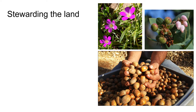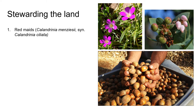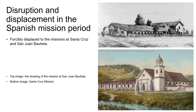Historically, managing natural resources was of course vital for survival because it provided food and shelter. But stewardship of the land was also central to spiritual and cultural practices. The pictures here on the right show three plants from different plant communities whose fruits all have historical local importance as sources of food — you can see red maids, manzanita, and tan oak.